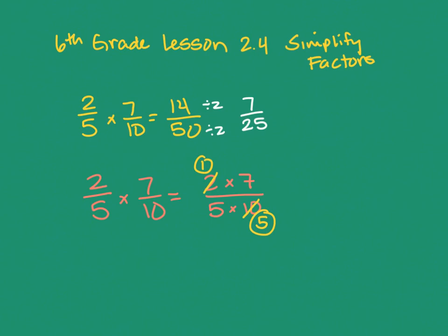Once I've reduced my crosses down as low as they'll go, I just multiply across like before. One times seven is seven, and five times five is twenty-five. Notice I got the same answer as before — only I didn't have to work with as large numbers; it was much smaller numbers. It's equal either way. If you prefer to just multiply and then reduce from those big numbers, that's fine. But as you practice this, I think you'll realize it's much easier to reduce fractions when they are smaller numbers, so doing it before multiplying just makes it easier.